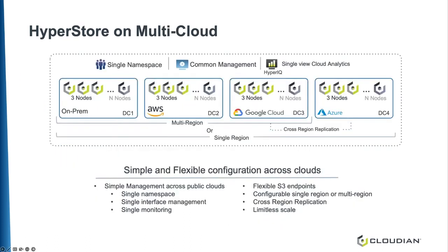With HyperStore, you get a simple but flexible configuration across clouds. You get a single namespace across on-prem and all the major hyperscalers, a single common management interface, and with our HyperIQ product, you get a single pane monitoring and analytics platform across clouds. The S3 service is highly flexible, allowing for single or multi-region configurations. In terms of scale, the smallest cluster starts at just three nodes, and as it is a true scale-out solution, can incrementally add nodes to cope with the largest datasets.